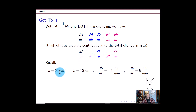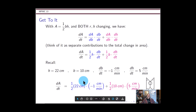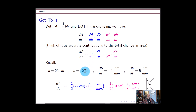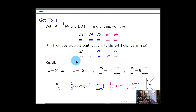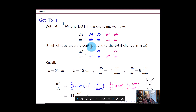Plugging in: h = 22 cm, db/dt = −1 cm/min, b = 10 cm, dh/dt = 5 cm/min. Watch the units: height and base are in centimeters, the rates db/dt and dh/dt are in centimeters per minute, so each term has units of square centimeters per minute — exactly what we expected for dA/dt. The final value is dA/dt = ½(22)(−1) + ½(10)(5) = −11 + 25 = 14 square centimeters per minute. The height is winning: even though the base is shrinking, the height is increasing fast enough that the total area is growing.